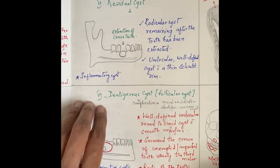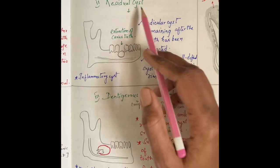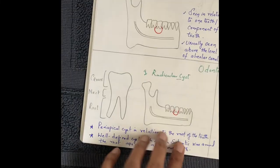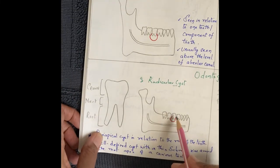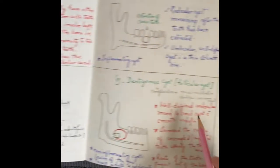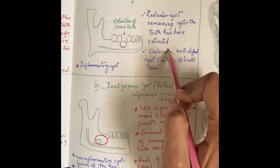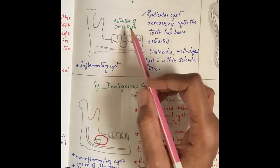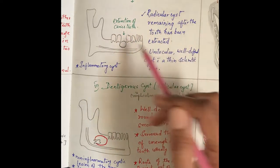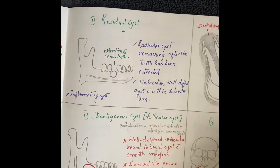Coming to the residual cyst — these are all odontogenic cysts present above the mandibular canal. The residual cyst is a radicular cyst remaining after the tooth has been extracted. The carious tooth is removed but the cyst is not noticed, so it remains. It is a unilocular, well-defined cyst with a thin sclerotic rim.